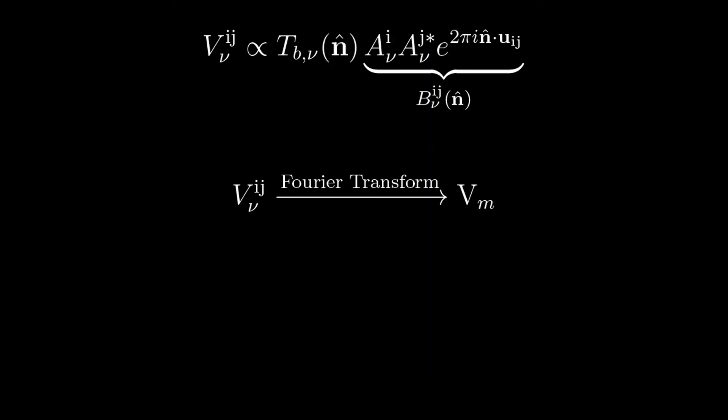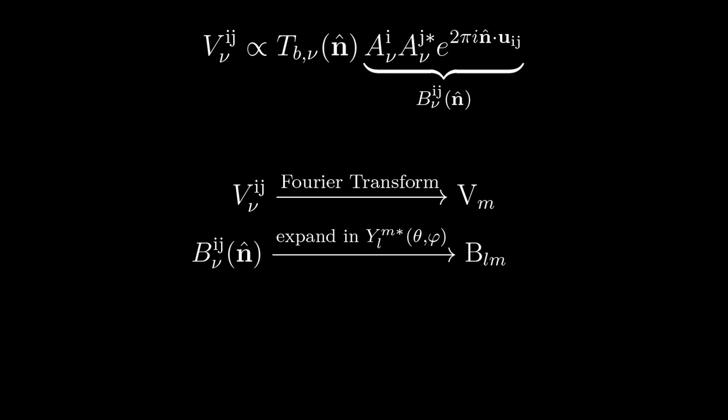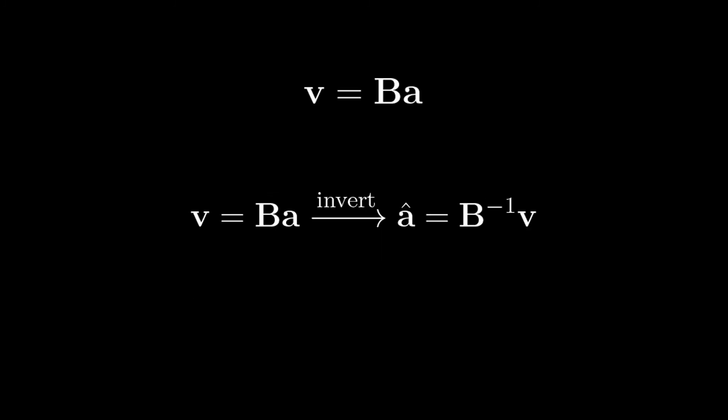Fourier transforming the visibilities with respect to M allows us to describe the visibilities as M-modes on an M-by-M basis. If you then also expand the system characteristics, the beam transfer function and sky in spherical harmonic coefficients, you can reduce the measurement equation to a simple linear equation. Solving for the sky in this case would simply be inverting the equation.